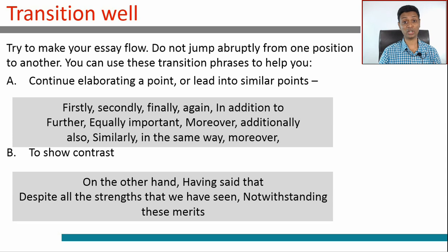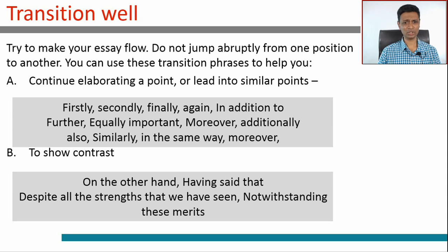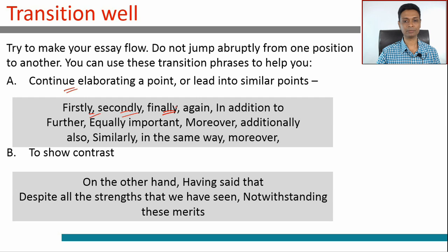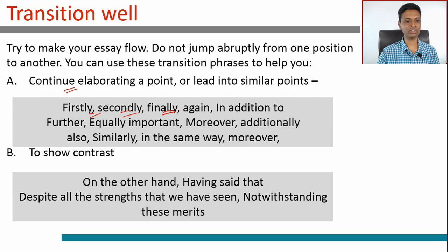Transition well. Whenever you're writing the body of the essay, you have three points and somehow the essay feels very clunky. How do you fix that? Whenever you're elaborating a point, you say: firstly, secondly, finally, again, in addition to, equally important, also to be considered, moreover — all of these give you a good framework for enumerating and elaborating on one theme. These are good transition phrases if your essay is arranged in that way.